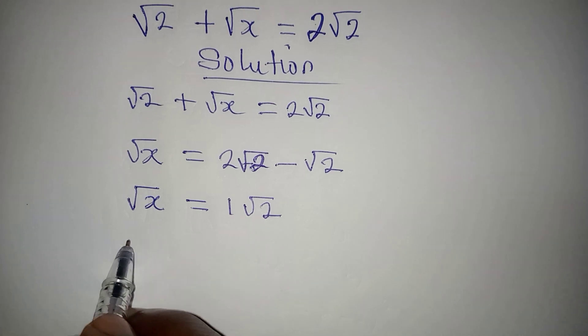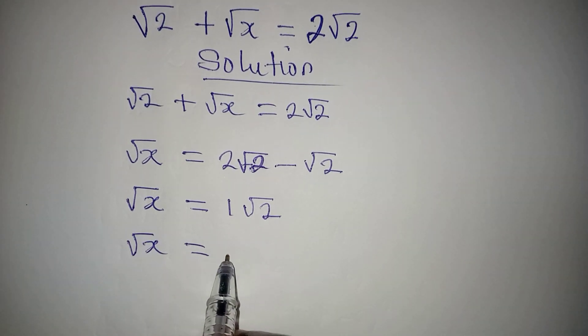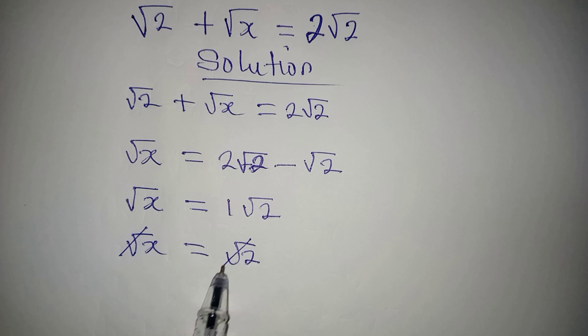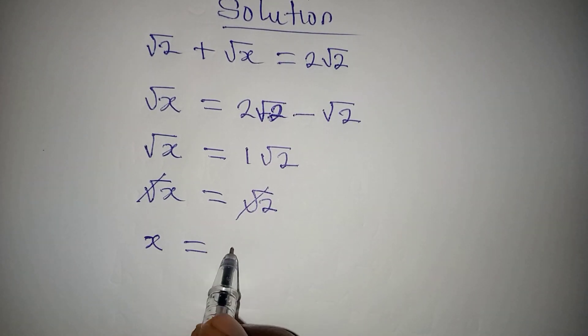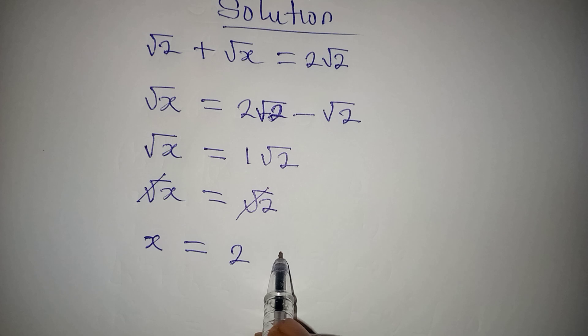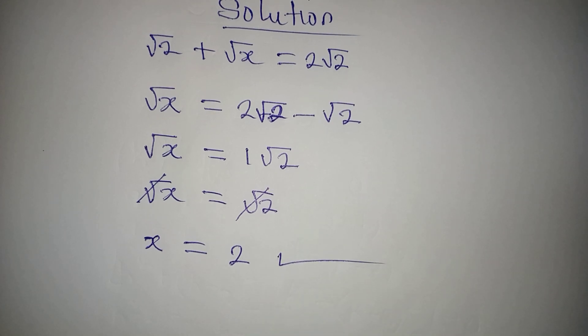Right, but we don't have to indicate this, so it's gonna be root x equal to root 2, and you know this and this can cancel. So x will be equal to 2. So this is the value of x.